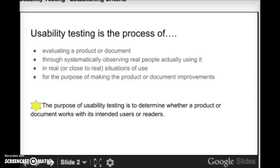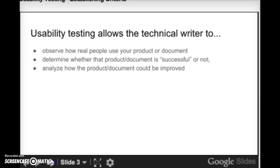Usability testing is the process of evaluating a product or document through systematically observing real people while they're actually using it in real or close-to-real situations of use, for the purpose of making that product or document better. The purpose of usability testing is to determine whether a product, document, or process works with its intended users in the manner the author had envisioned. It allows the technical writer to observe how real people use the product, helps determine whether it is successful, and helps analyze how it could be improved.